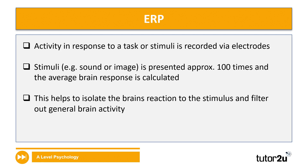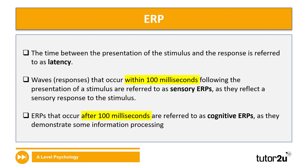Let's take a closer look at ERPs — event related potentials. Activity in response to a task or stimuli is recorded via electrodes. Once the participants are given the stimuli, such as a sound or an image, it is presented quite a number of times — in research something may be presented about 100 times — and then the average brain response is calculated. This helps to isolate the brain's reaction to the stimulus and filter out any general brain activity that may be irrelevant. The time between the presentation of the stimulus and the response from the participant's brain is referred to as latency — another specialist term to add to your list.